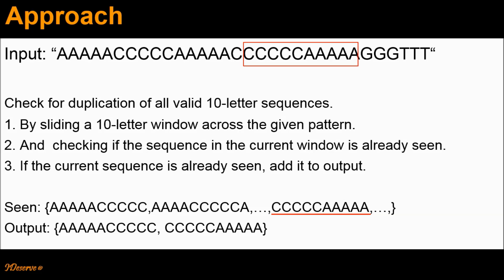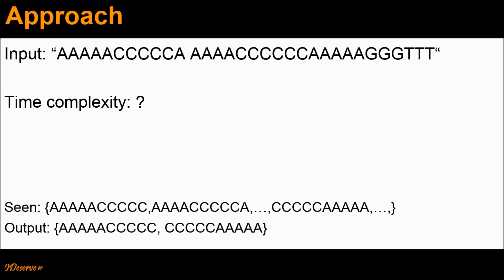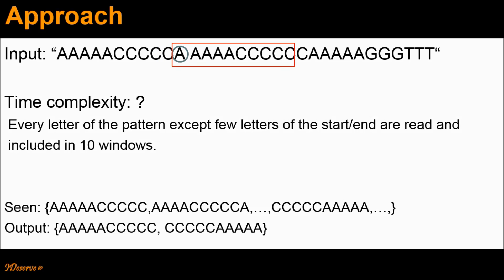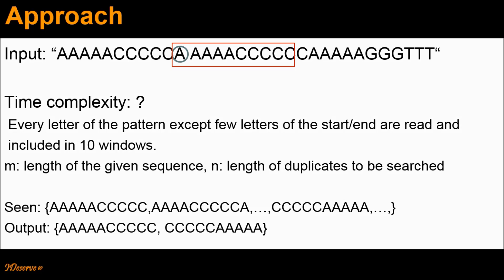We repeat these steps until all valid 10-letter sequences are covered and return the output. Now, what would be the time complexity for this approach? Let's focus on a single letter A. This letter A would be part of 10 such sequences. To generalize, every letter of the pattern except a few letters at the start and end are read and included in 10 windows. Therefore, if m is the length of the given sequence and n is the length of the duplicates to be searched — in this case n equals 10 because we are searching for 10-letter duplicates.